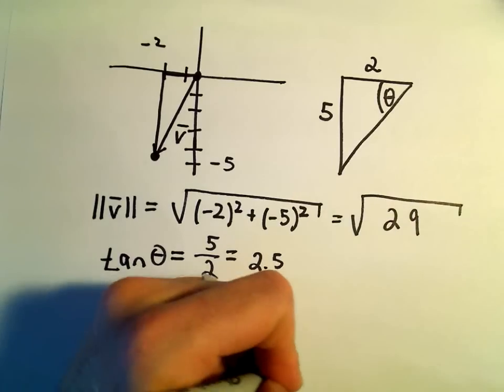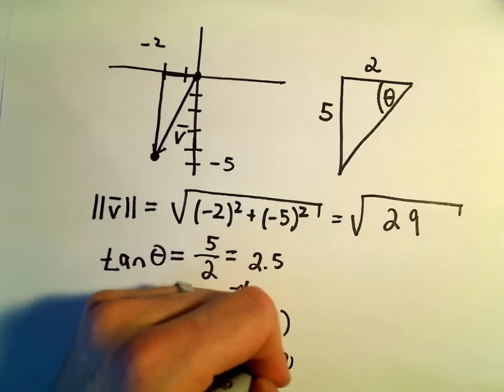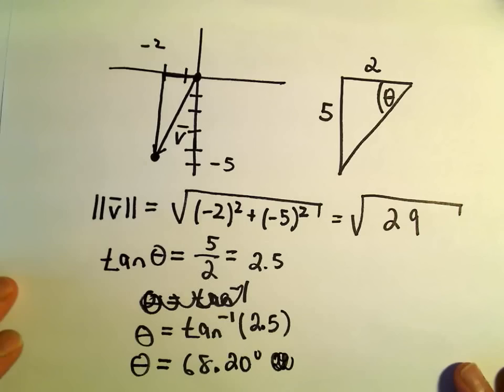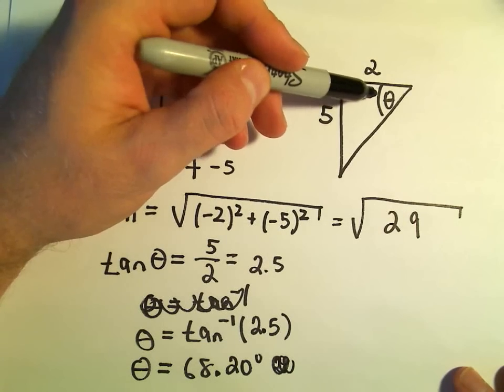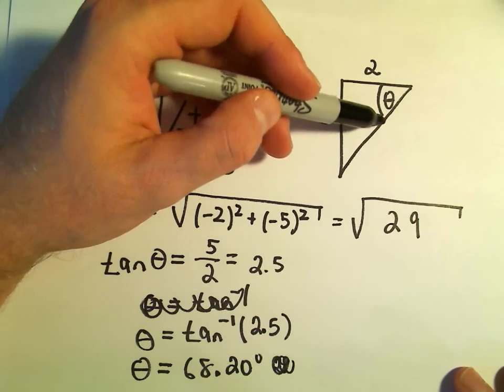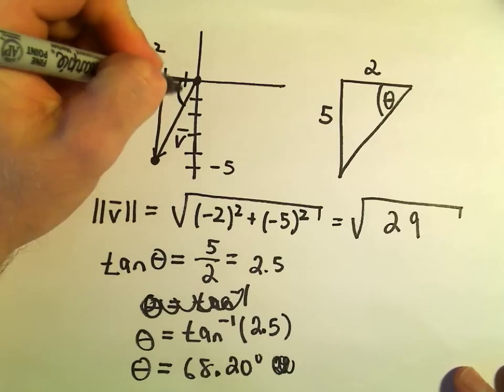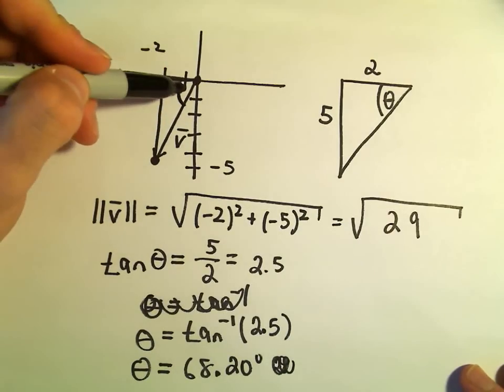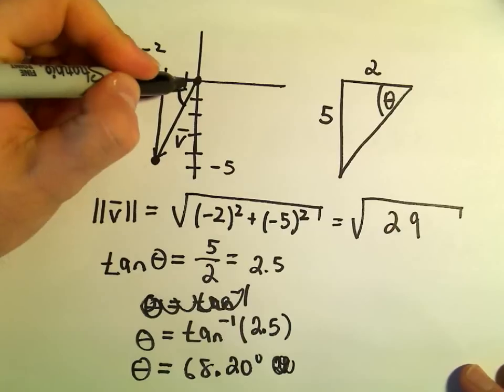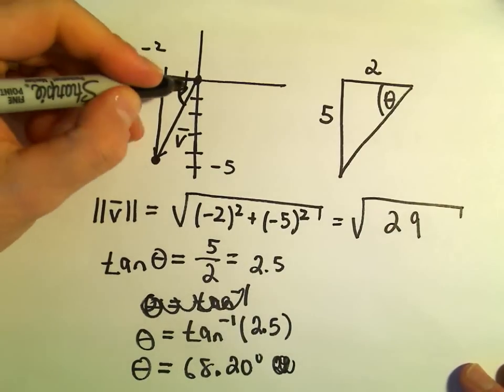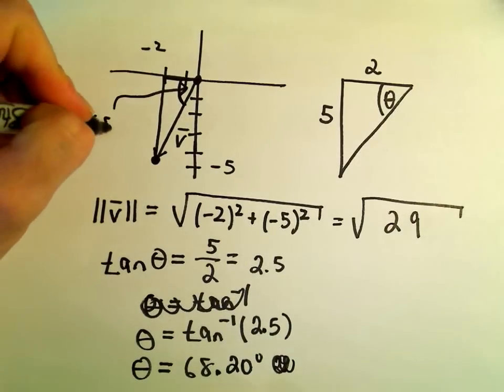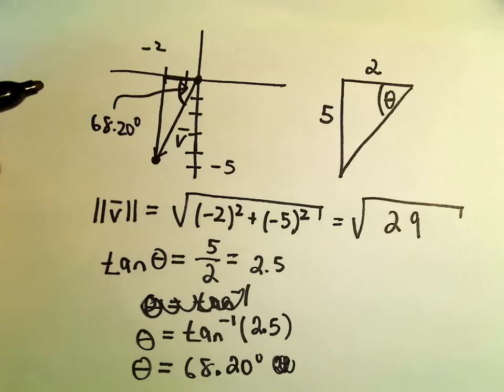Let's just leave it at 68.2 degrees. But what we've really found is this angle in our triangle. Really, that's going to correspond to this angle in the top right corner. This is 68.20 degrees.